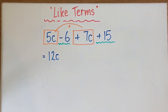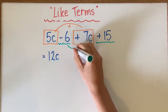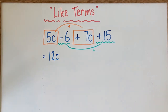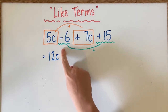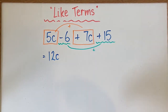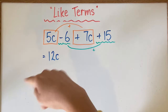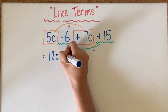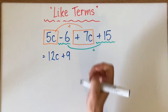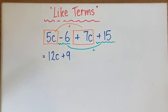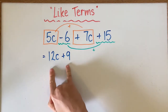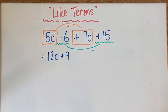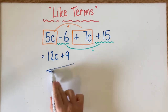For the constants, we've got negative 6 and we're going to add 15 to it. So you're starting at negative 6 and adding 15, or starting at 15 and taking away 6 — it'll give you the same result, which is positive 9. These can't be simplified any further because they're not like terms, so 12C + 9 is your simplified answer.